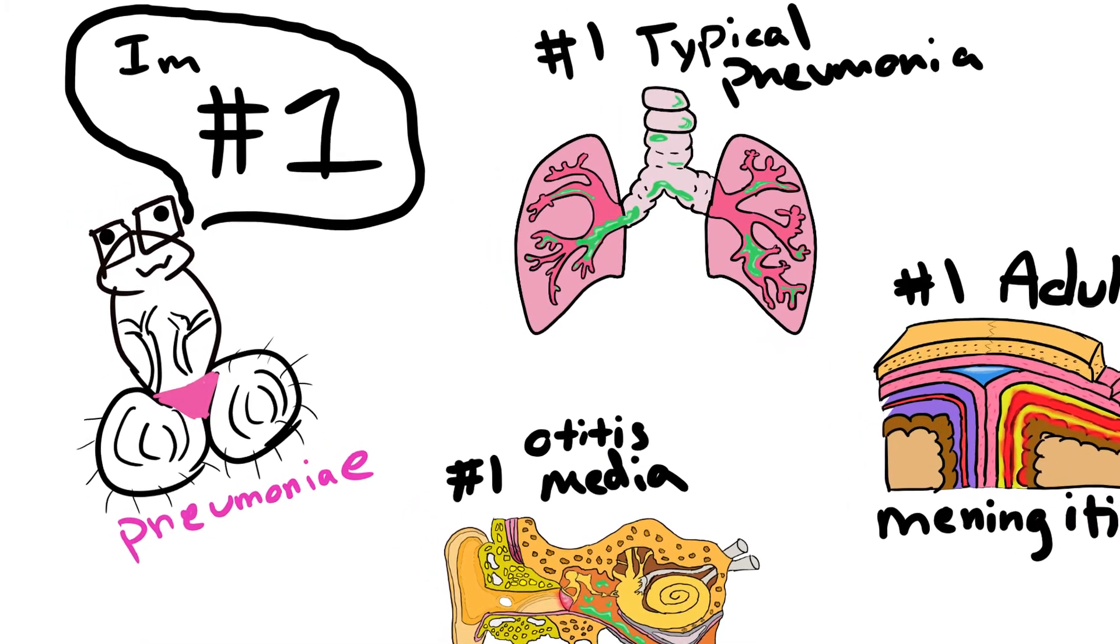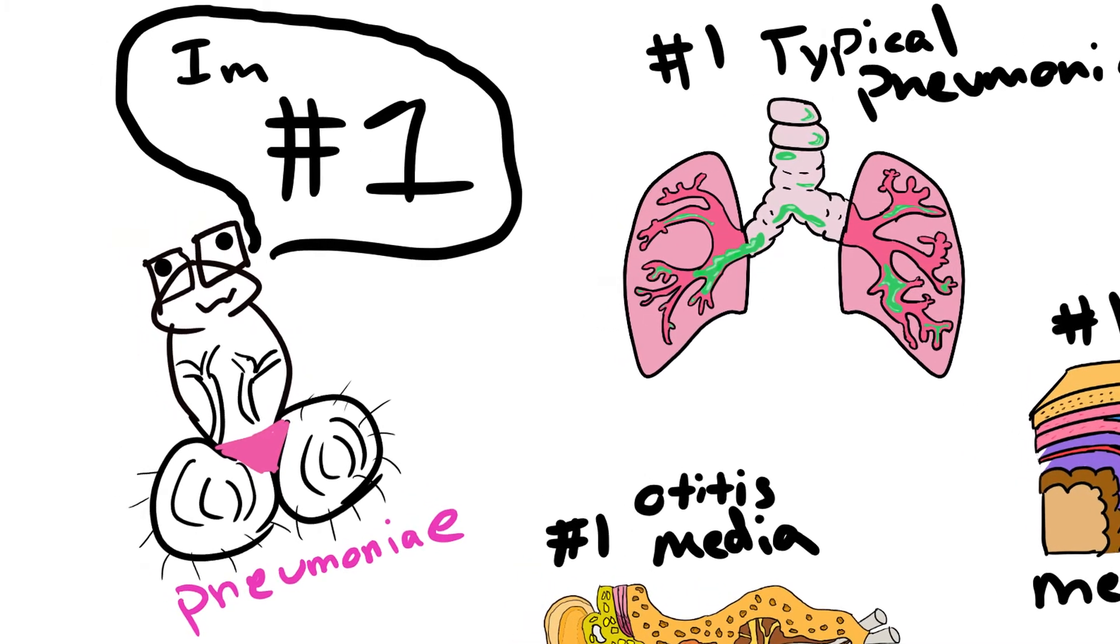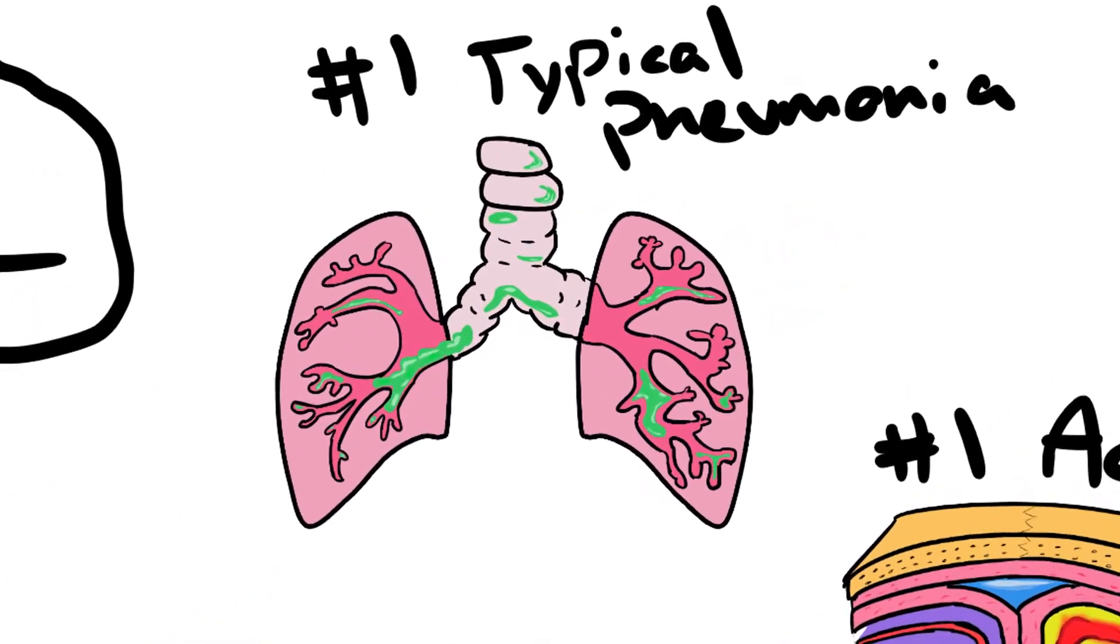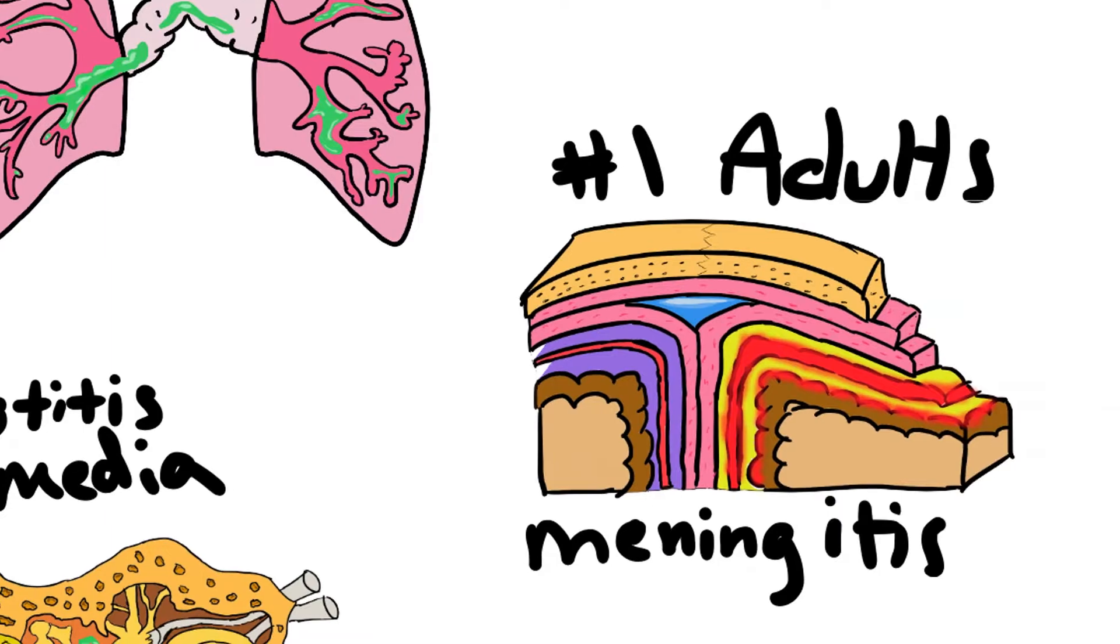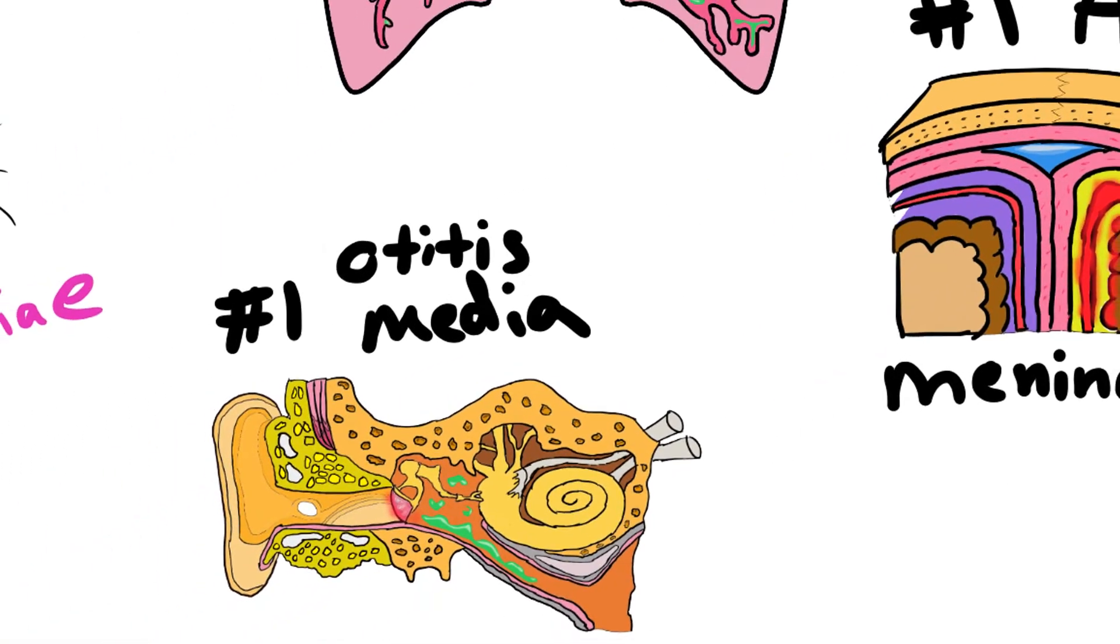So yeah streptococcus pneumoniae is number one. Meaning that it's the number one cause of typical pneumonia, the number one cause of adult meningitis, and the number one cause of otitis media as well as sinusitis.